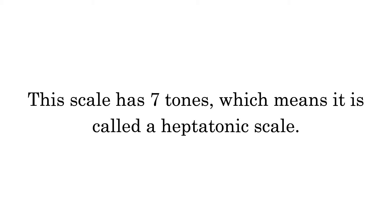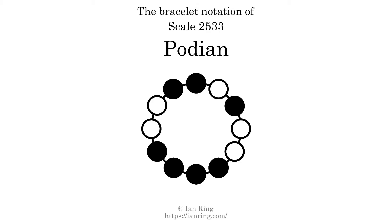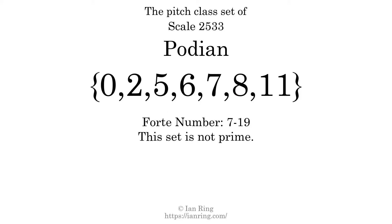This scale has 7 tones, which means it is called a heptatonic scale. This is a bracelet notation diagram of scale 2533. The shaded circles represent tones that appear in the scale, and they are read clockwise, starting at the top. The pitch class set for this scale is 0, 2, 5, 6, 7, 8, 11.